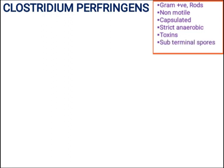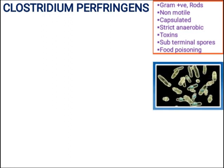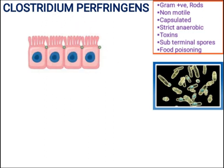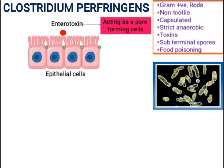Clostridium perfringens has sub-terminal spores. Under the microscope it appears as rod-shaped bacteria with sub-terminal spores. Clostridium perfringens also produces Clostridium Perfringens Enterotoxin (CPE), which acts on epithelial cells forming pores — it acts as a pore-forming toxin.